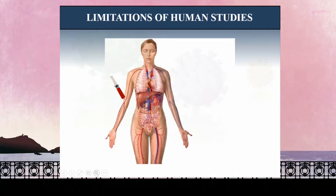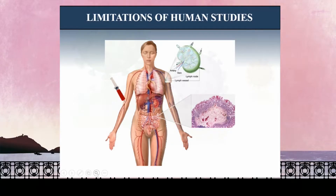By the time HIV establishes a systemic disseminated infection, all of these lymphoid tissues are loaded with virus, virally infected cells, as well as viruses trapped on the FDC network. One of the challenges with human studies is that most have accessed a lymphoid compartment that is very easy to access longitudinally, and that's the peripheral blood.